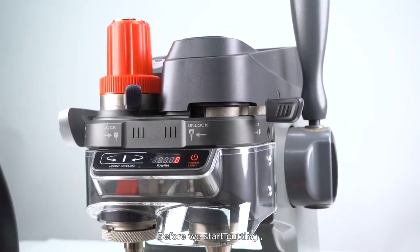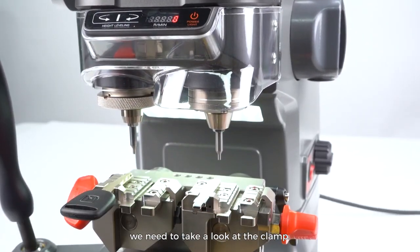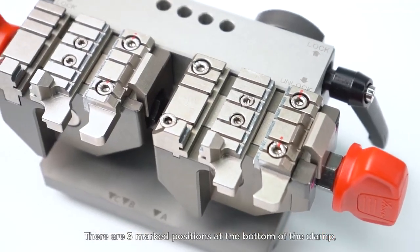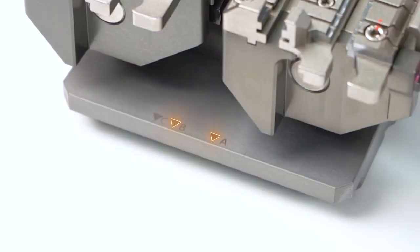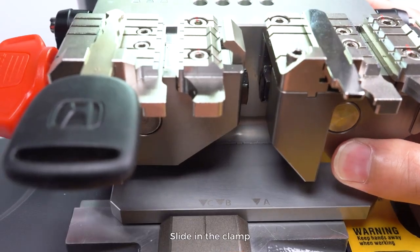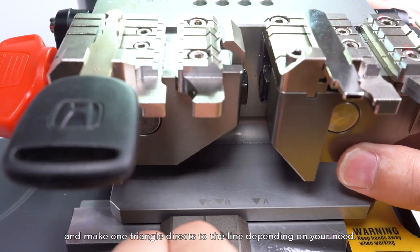Preparation. Before we start cutting, we need to take a look at the clamp. There are three marked positions at the bottom of the clamp: A, B, and C. Seal it in the clamp and make one triangle direct to the line depending on your need.